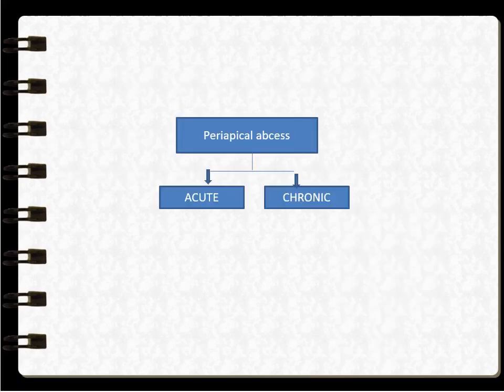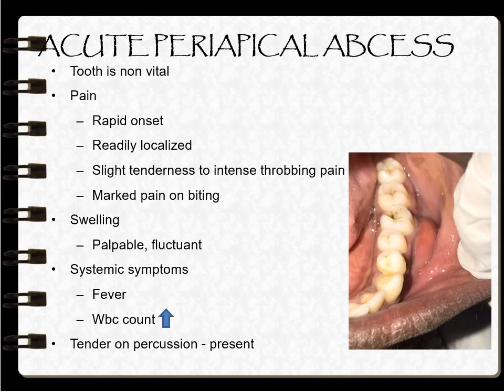Periapical abscess can be of two types: acute or chronic. In acute periapical abscess, the tooth is non-vital. There may be rapid onset of pain — ranging from localized slight tenderness to intense throbbing pain — and there may be marked pain on biting. A swelling that is palpable and fluctuant can also be observed.